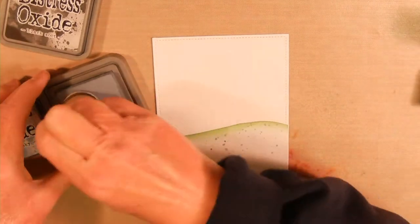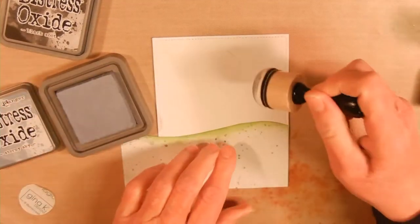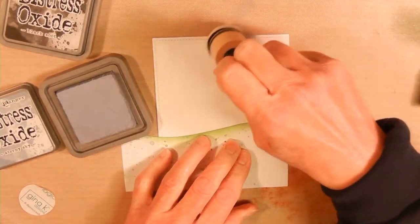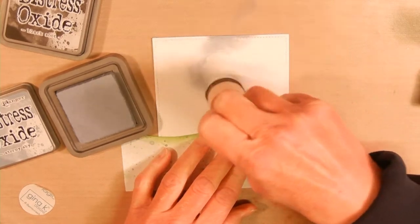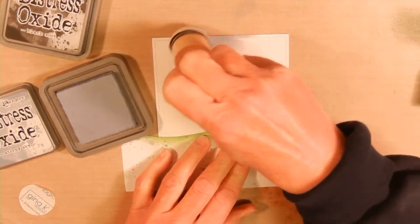Natalie used a magnetic ruler to do her masking for the ground and the sky. I'm using some Gina K masking paper and you can see I've used this before.